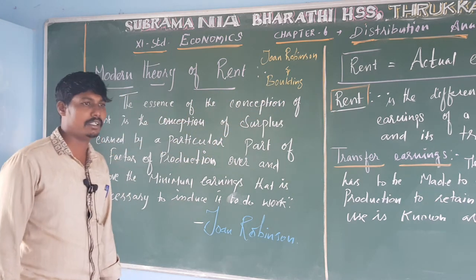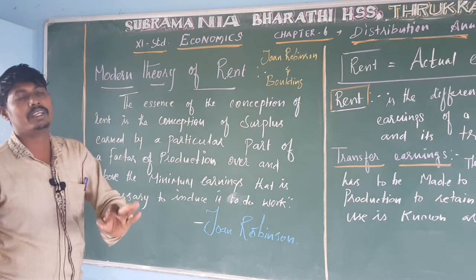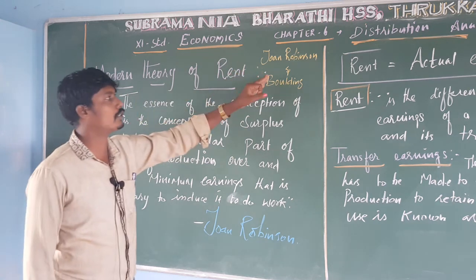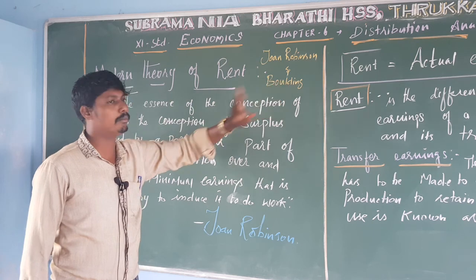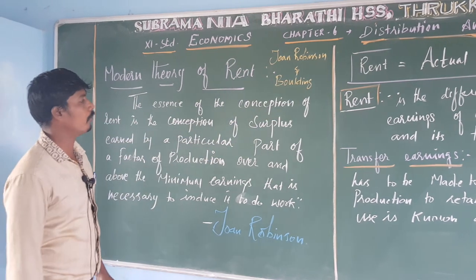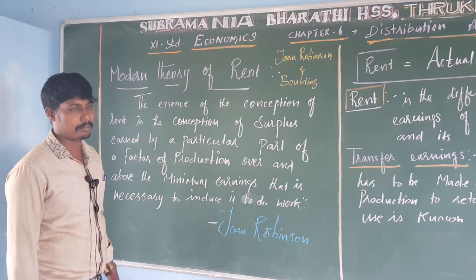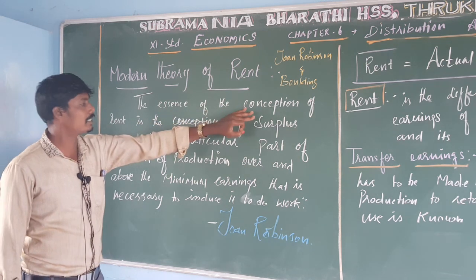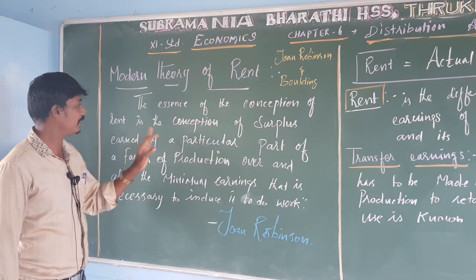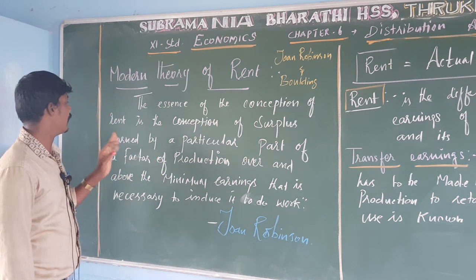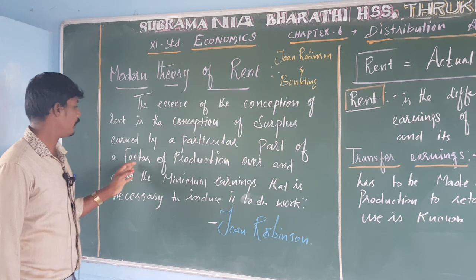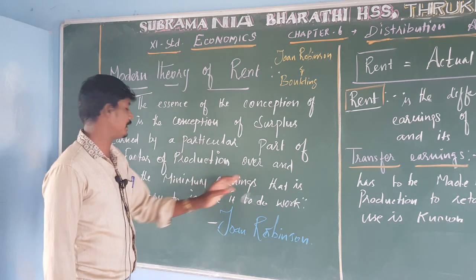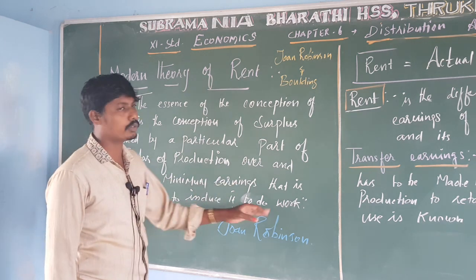They classified rent into three categories: rent, Quasi-rent, and Modern Theory of Rent. The Modern Theory of Rent, explained by Joan Robinson and Boulding, states that the essence of rent is the surplus earned by a particular part of a factor of production over and above the minimum earnings necessary to induce it into work.